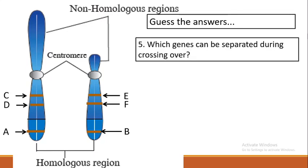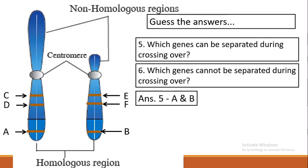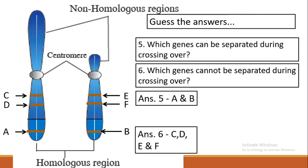The final two questions: which genes can be separated during crossing over? This is a conceptual question — you need to apply your basics. Crossing over occurs in the homologous region, so the genes present in the homologous region will be separated. Genes A and B are on the homologous region, so crossing over will occur between them and they will get separated. The answer is A and B genes.